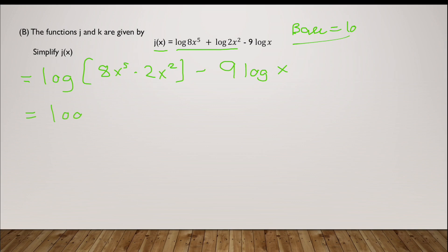Now I could have log 8 times 2 is 16, and x to the 5 into x to the 2 is x to the 7. So I have log 16 into x to the power 7 minus 9 log x. Now according to the power rule I can have log 16 x to the power 7 minus log x to the power 9 if we just reverse the power rule.